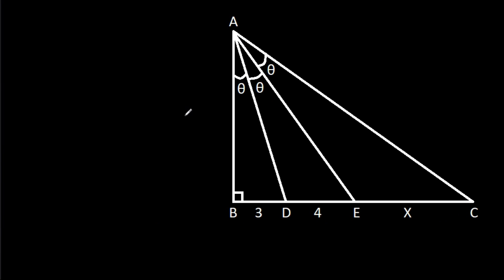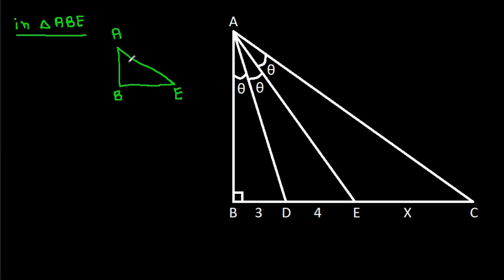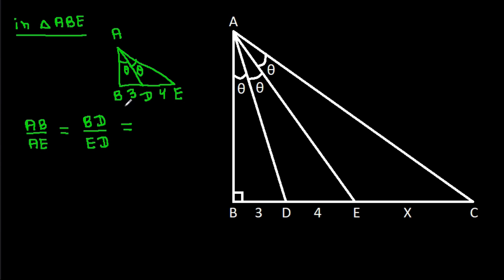In triangle ABE, AD is the angle bisector, and BD is 3, DE is 4. So AB over AE will be equal to BD over ED. That means if AB is 3A, then AE will be 4A.